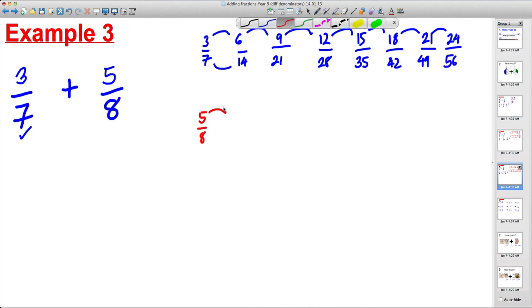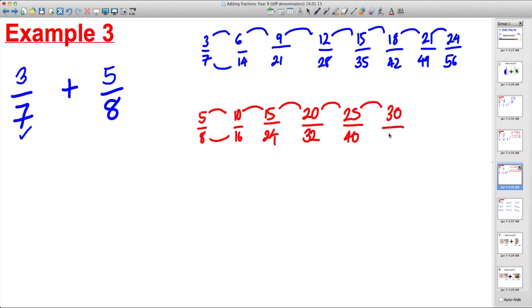And we do the same thing down here. Up in 5 would be 10. Up in 8 would be 16. Nothing similar. Up in 5 would be 15. Up in 8 would be 24. Nothing on the bottom the same. Up in 5 would be 20. Up in 8 would be 32. Up in 5 would be 25. Up in 8 would be 40. Up in 5 would be 30. Up in 8 would be 48. And up in 5 would be 35. And up in 8 would be 56.